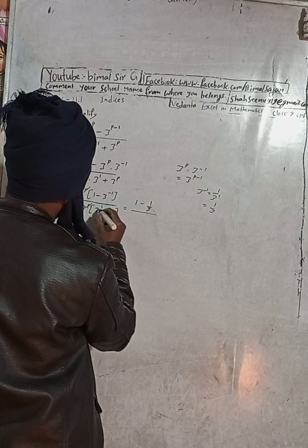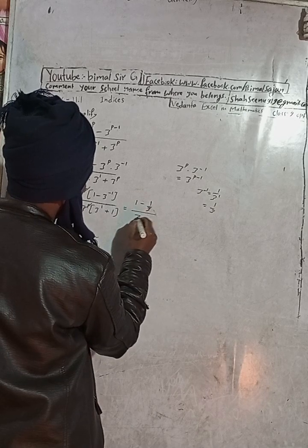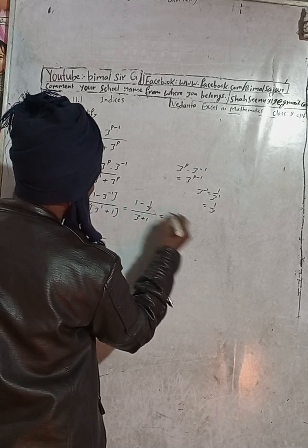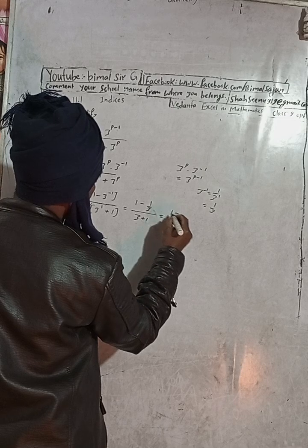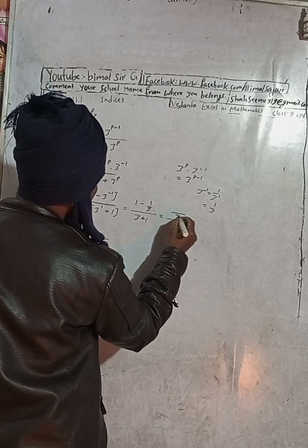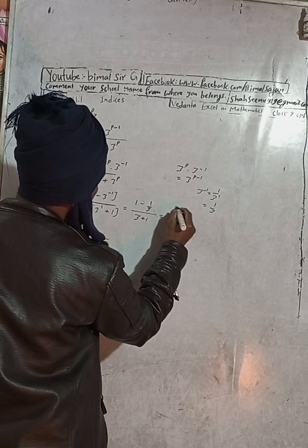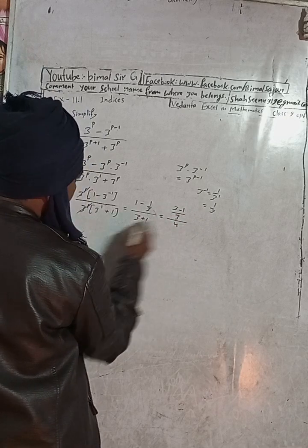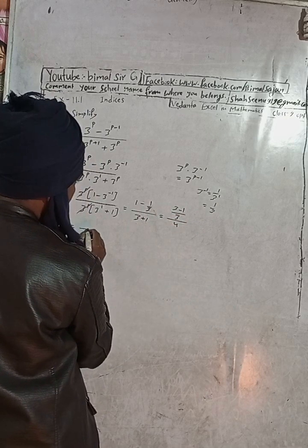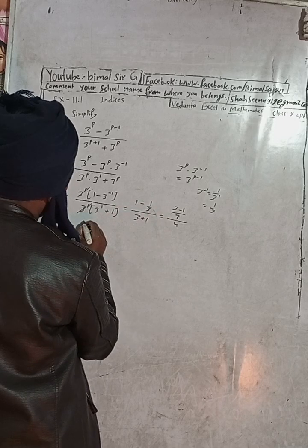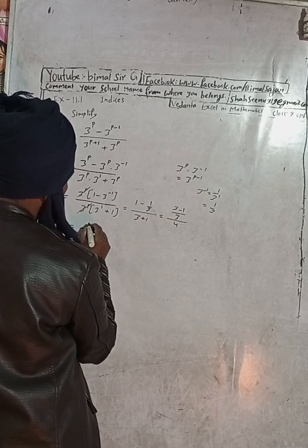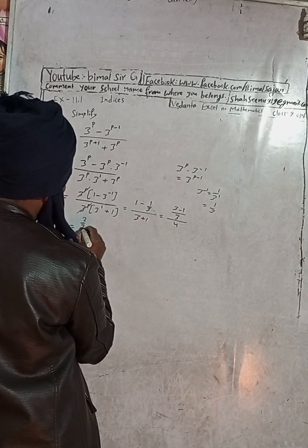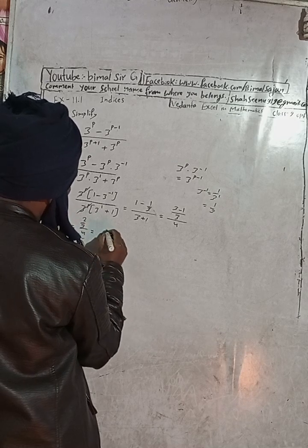So now this is here 1 by 3, and this is 3, 1, that 3 plus 1. So 1 minus, LCM is 3, okay? This 3, LCM 3, 1 that 3 minus 1 by 3, 1 4. So this is equal to here, this is equal to here, this is the reference line, 2, 2, 2 by 3 into 4.